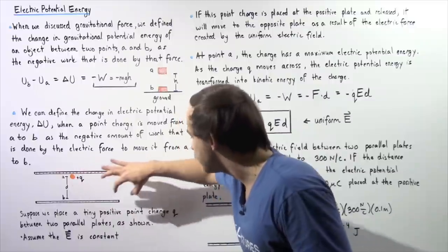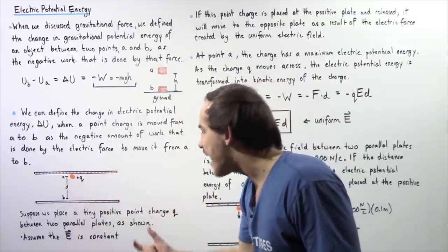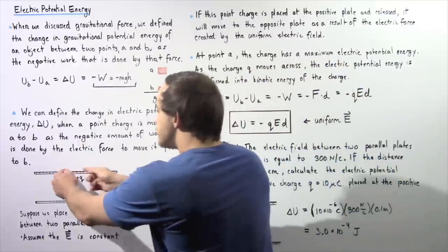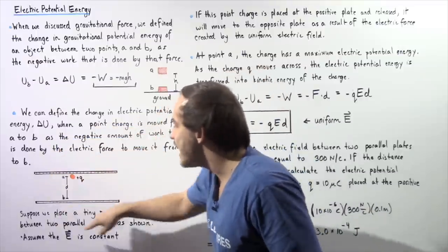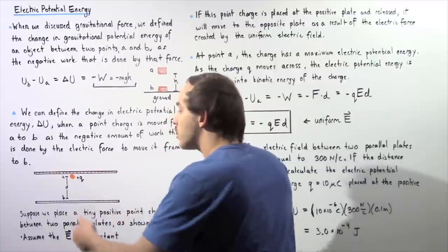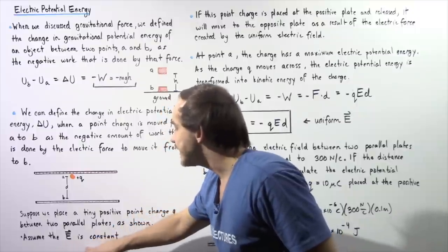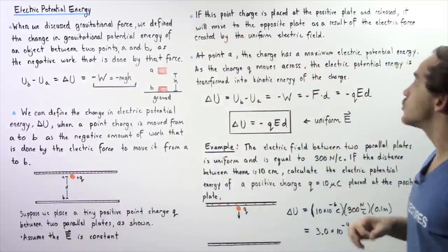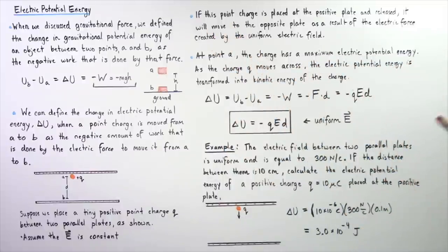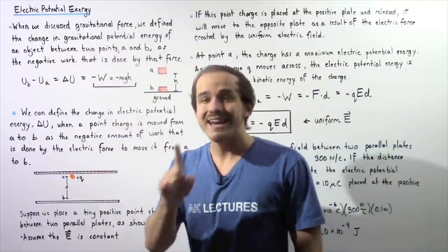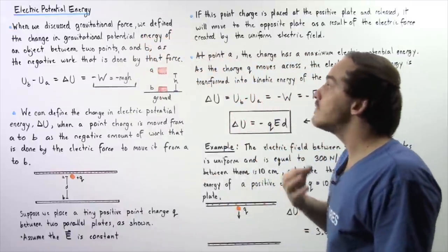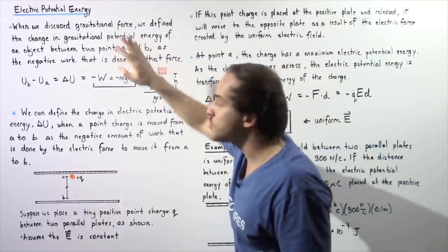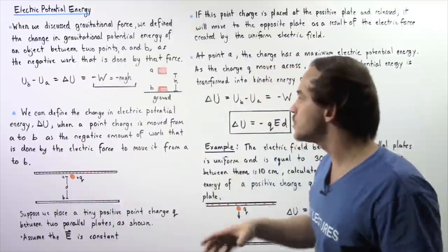Let's look at the following diagram. Suppose we place a tiny positive point charge Q between two parallel plates. We assume the length of the plates is much larger than the distance D between them. We have the positive plate and the negative plate, and because D is much smaller than the plate length, we assume the electric field is constant. If this point charge is placed at the positive plate and released, it will move to the opposite plate due to the electric force — just as the mass moved from A to B due to the gravitational field, lowercase g, produced by the Earth.